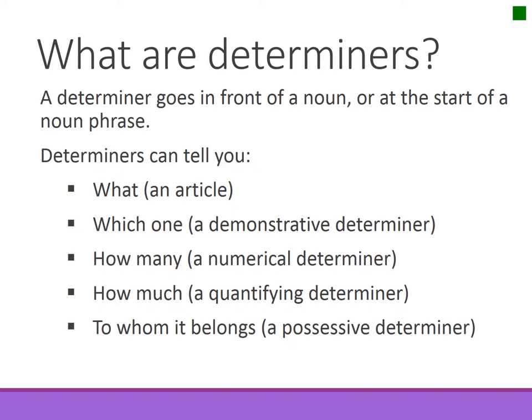A determiner goes in front of a noun or at the start of a noun phrase. They can tell you what, which one, how many, how much, and to whom it belongs.